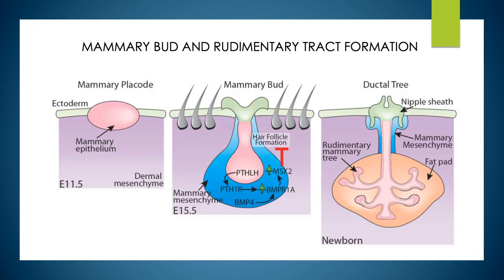Studies in cultured mammary cells grown in a three-dimensional matrix have implicated three processes in mammary lumen formation: apoptosis, autophagy, and cellular remodeling. Nipple generation occurs by modifications of the skin overlying the primary mammary mesenchyme and involves thickening of the epidermis, suppression of hair follicles, and generation of a nipple sheath from keratinocytes at the site where the primary duct connects to the skin surface.